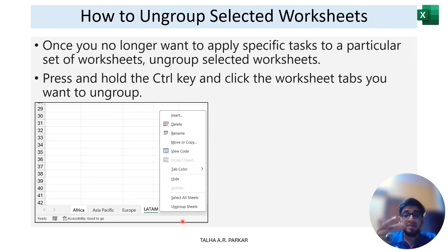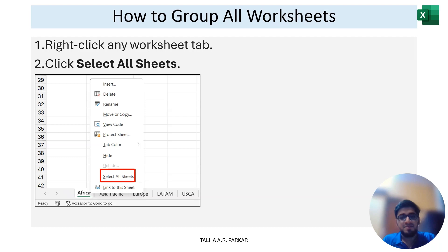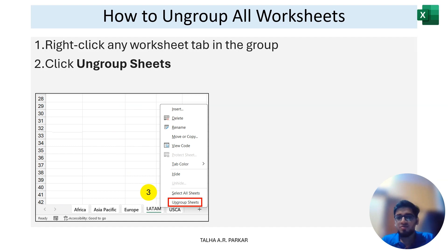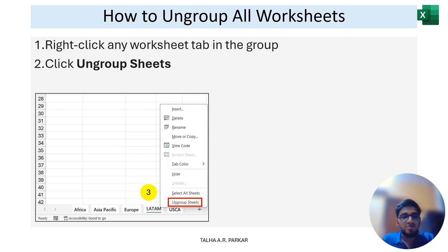Essentially you save time, become more efficient, and maintain consistency throughout your Excel file by keeping the same standard of formatting. To ungroup, just select the sheets and right-click to ungroup. To group all worksheets, you can right-click on any sheet and select 'Select All Sheets'. There's no specific shortcut — just select them with Ctrl for individual sheets, or right-click and select all sheets to group everything together.